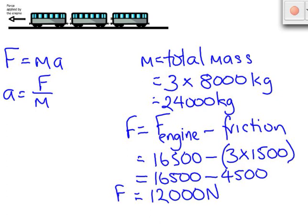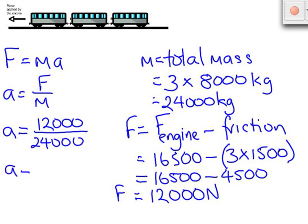Let's take these two numbers for unbalanced force and mass and put them into our equation for acceleration. That gives a equal to 12,000 divided by 24,000. So the acceleration of our train is 0.5 metres per second squared.